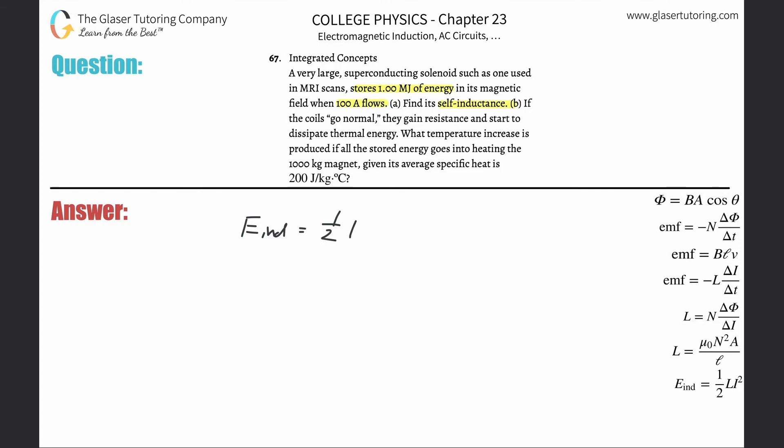The energy stored in an inductor will be equal to one half multiplied by the inductance multiplied then by the current squared. Now I'm finding the self-inductance, that means I'm finding L, that means I've got to divide these terms on out.